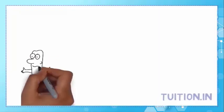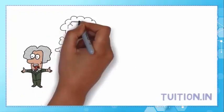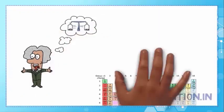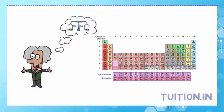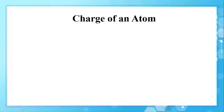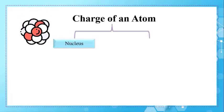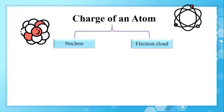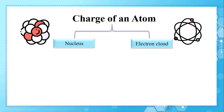After recalling the charge and the mass of each subatomic particle, a question comes to mind: what is the mass of the whole atom, and what is its charge? The overall charge of an atom depends on both the nucleus and the electron cloud. Let's calculate the charge of each region separately.